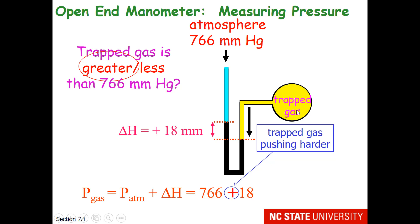So the trapped gas must be at greater pressure than the atmosphere. So the pressure of the gas is 766 plus 18. That would be 784 mm of mercury.